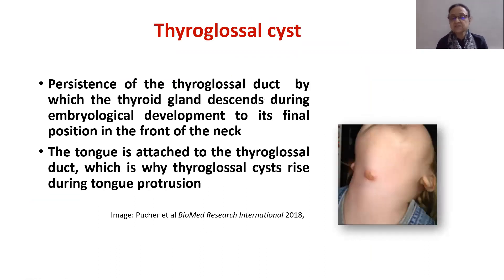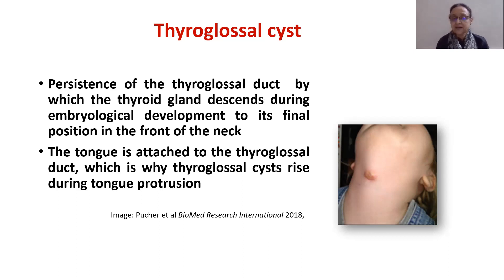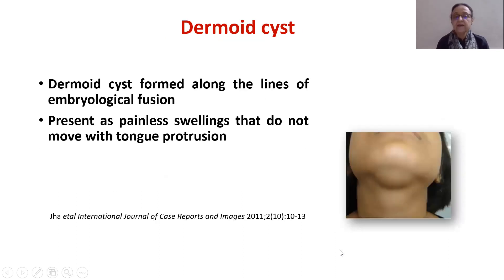Thyroglossal cyst is the persistence of the thyroglossal duct, by which the thyroid gland descends during embryological development to its final position in the front of the neck. The other end is at the foramen cecum of the tongue, and since the tongue is attached to the thyroglossal duct, the thyroglossal cyst rises during tongue protrusion. The dermoid cyst is formed along the lines of embryological fusion and presents as a painless swelling that does not move with tongue protrusion.